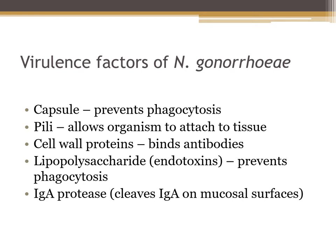Neisseria gonorrhoeae has several virulence factors. It has a capsule, which prevents phagocytosis. It has pili that allow attachment to mucosal surfaces of the endocervix and urethra. Cell wall proteins 1, 2, and 3 bind antibodies and prevent phagocytosis. It also has lipopolysaccharides (endotoxins) that prevent phagocytosis, and it produces the enzyme IgA protease, which cleaves the IgA molecule and compromises secretory IgA mucosal immunity.